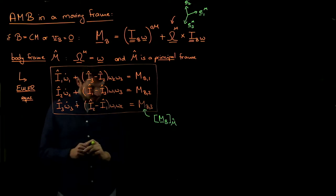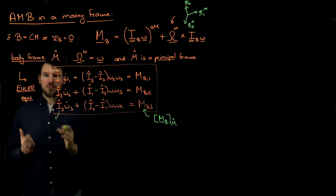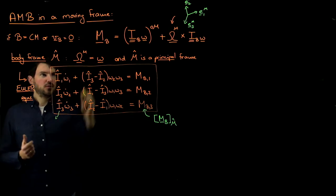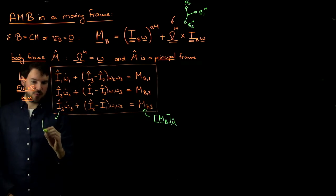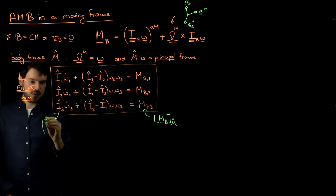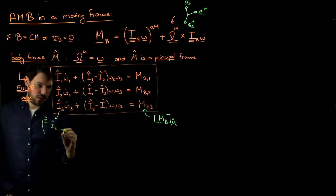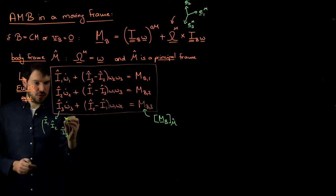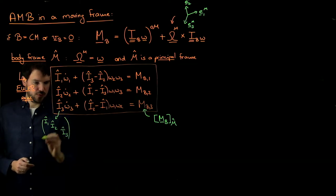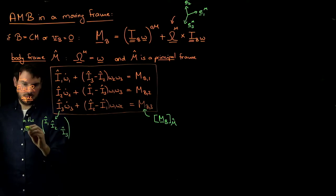Next, these I-values are nothing else but the diagonal values of the inertia tensor. We mentioned we're in the principal frame, which means the moment of inertia tensor looks like: I1-hat, I2-hat, I3-hat along the diagonal. This is the moment of inertia tensor in the principal frame — the M-hat frame.